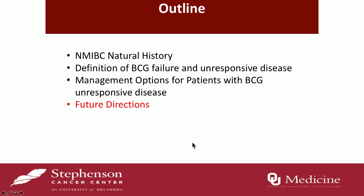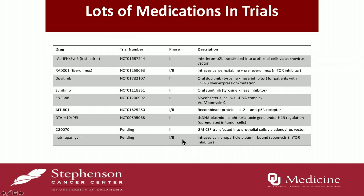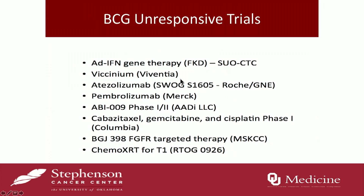Several clinical trials are ongoing. Options include interferon transfected into urothelial cells via an adenovirus vector, recombinant proteins, and mycobacterial cell wall complexes. Some trials are even using immunotherapy such as pembrolizumab for patients with BCG-unresponsive bladder cancer. The future is wide open in this space, with everyone targeting the FDA benchmark of one-year recurrence-free survival of 30 percent.